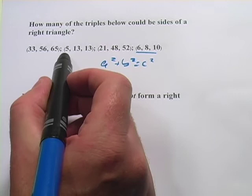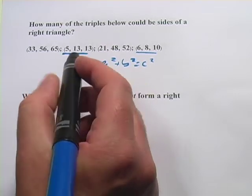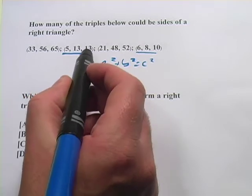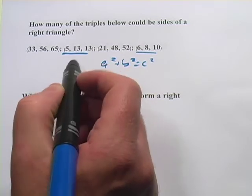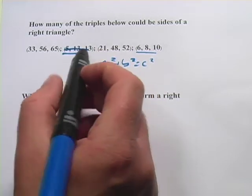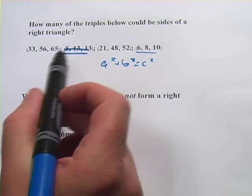One that jumps out at me that we can get rid of right away is this one, 5, 13, and 13. In a right triangle, you have one side that's the longest. This is not going to be a right triangle because it's got the two longer sides the same.